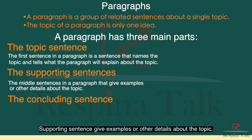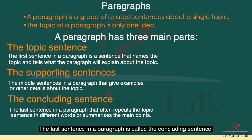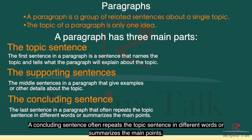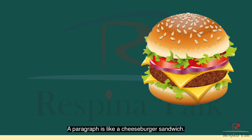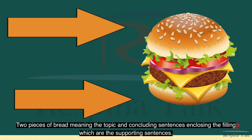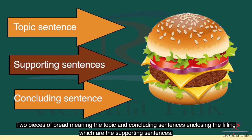Supporting sentences give examples or other details about the topic. The last sentence in a paragraph is called the concluding sentence. A concluding sentence often repeats the topic sentence in different words or summarizes the main points. A paragraph is like a cheeseburger sandwich — two pieces of bread, meaning the topic and concluding sentences, enclosing the filling, which are the supporting sentences.